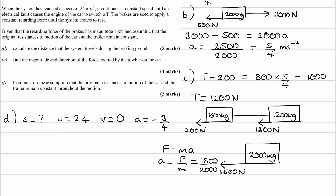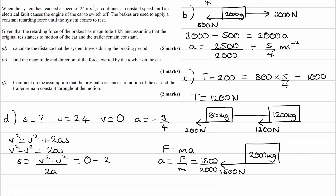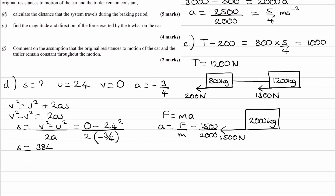We can use the SUVAT equation v squared equals u squared plus 2as. Rearranging for s: s equals v squared minus u squared all over 2a. Substituting in our numbers and calculating, we end up with 384 meters, and that's part D done.